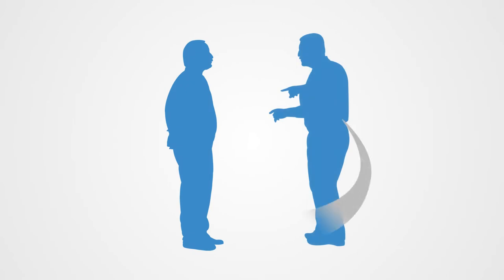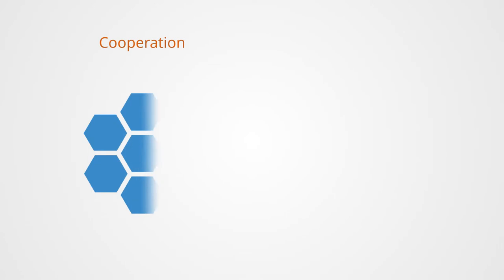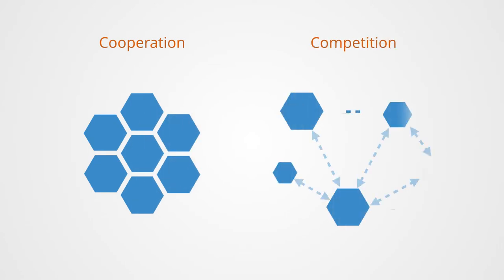Game theory is the study of interdependent interactions between adaptive agents. When we look at these interactions between agents in the world around us, we see elements of both competition and cooperation.